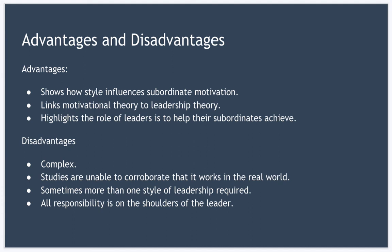Now in terms of disadvantages, I mean it's obviously pretty complex. I really hope you're following along, but I'm aware it's a pretty complex sub-topic. And with so many variables involved studies are unable to corroborate that the theory works in the real world. Sometimes a particular situation will require more than one style of leadership which is pretty confusing. And in the leader's subordinate relationship path-goal theory places almost all of the responsibility on the shoulders of the leader. Thus there's a risk that subordinates become dependent in some way on the leader and fail to develop to the next level.